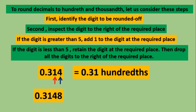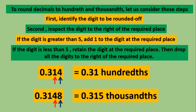Another example is 0.3148. If we're gonna round it off to the nearest thousands, first, identify the digit to be rounded off — ang digit na kailangan natin i-round off is number 4. Second, inspect the digit to the right of the required place — ang nasa kanan ng number 4 ay 8. So, the digit is greater than 5, so we would have to add 1 to the digit at the required place. So, yung 4, gagawin natin siyang 5. The answer would be 0.315.